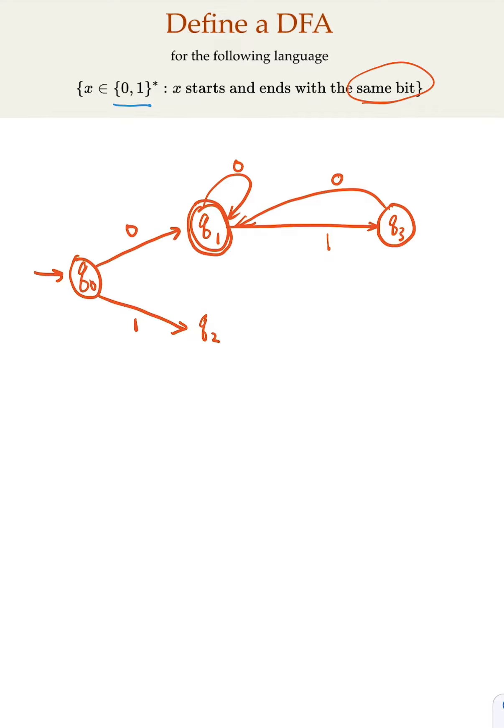Now, the other case, similarly, if you receive 1, that's good, accepting state. And if you've got a 0, you have to jump out to, let's say, Q4.